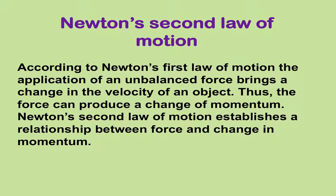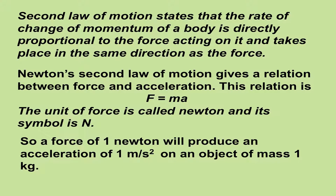According to Newton's first law of motion, the application of an unbalanced force brings a change in the velocity of an object. Thus, the force can produce a change of momentum. Newton's second law of motion establishes a relationship between force and change in momentum. The second law states that the rate of change of momentum of a body is directly proportional to the force acting on it and takes place in the same direction as the force. Newton's second law also gives a relation between force and acceleration: F = mA. The unit of force is called Newton, symbol capital N. A force of one Newton will produce an acceleration of one meter per second squared on an object of mass 1 kg.